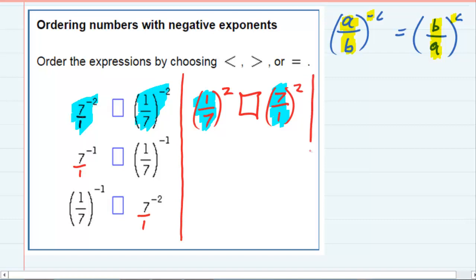And now I can evaluate those. 1 over 7 squared is going to be 1 squared, or 1 over 7 squared, 49.